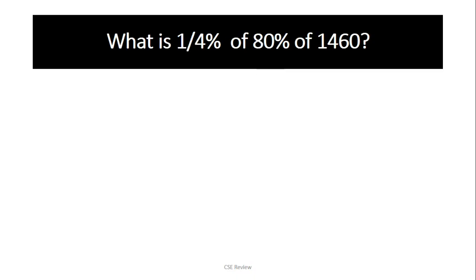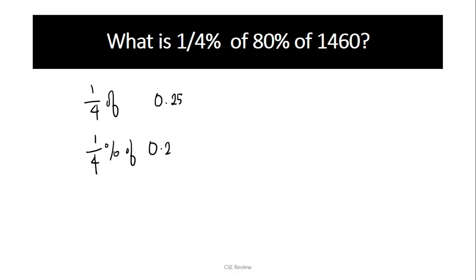It is the last question where people started getting different decimal places. I cannot emphasize this enough: 'one-fourth of' is different from 'one-fourth percent of.' Why? Because the word 'percent' changes everything. One-fourth of a number means 0.25 of that number — that's it. But one-fourth percent means you take your 0.25 and apply the percent to it, moving the decimal two more places: that becomes 0.0025, or one-fourth of one percent.